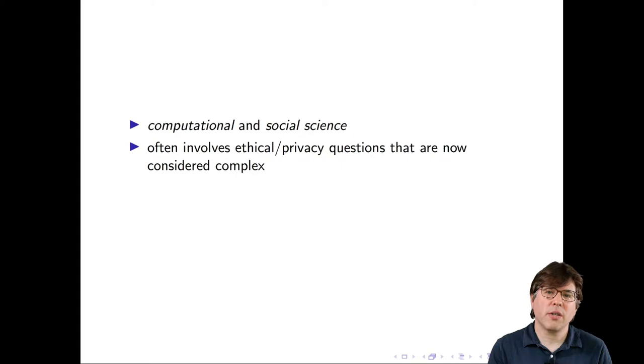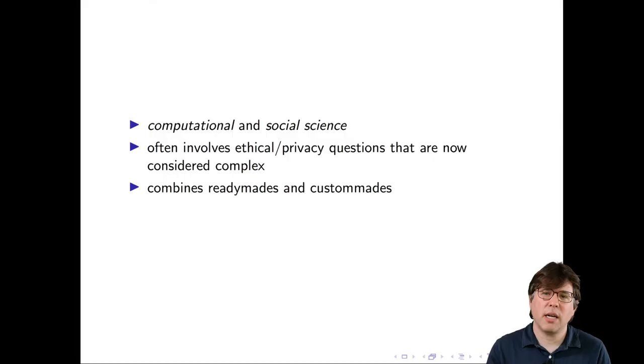This study also involves ethical and privacy questions that are now considered complex. In this particular case, they had access to the metadata of call records for 1.5 million customers. They did not have the actual calls, but they had access to the metadata. In other research, we've learned that the metadata from call records is actually quite identifying. Even though they didn't have names and addresses of these people, it probably would have been possible to figure out who they were. Blumenstock and his colleagues didn't do it, but they had to be very careful because of the privacy risk that the data had.